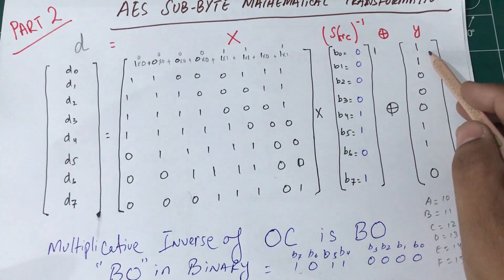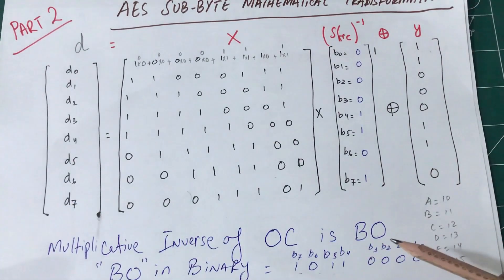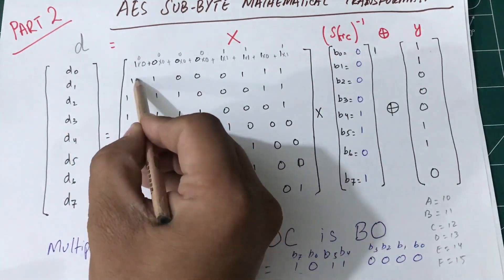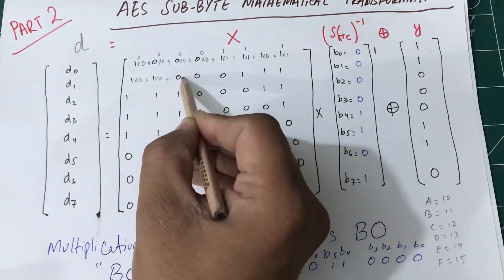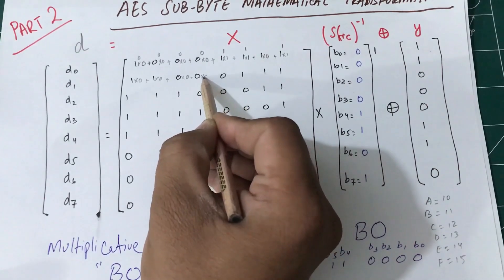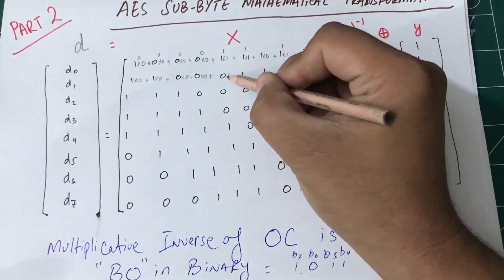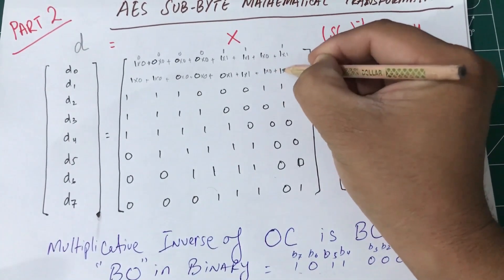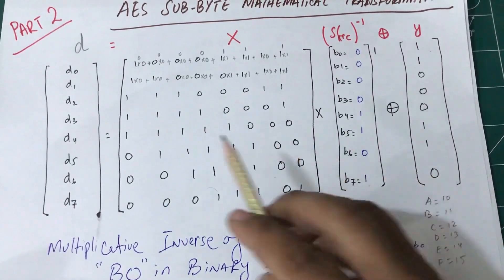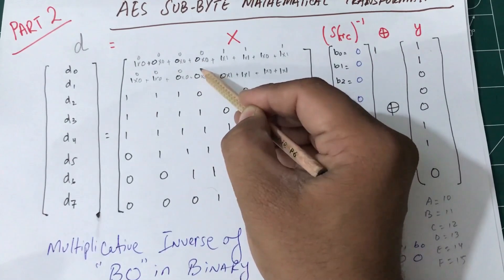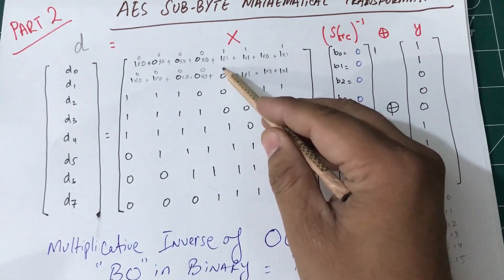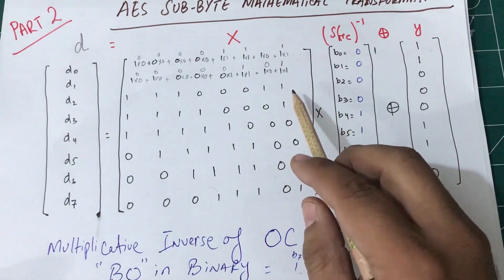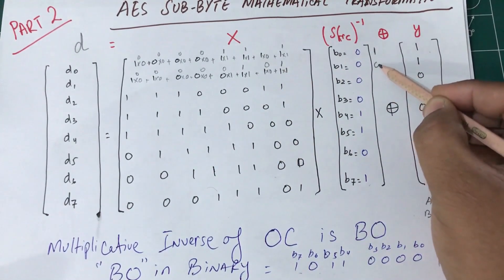Once I get all these row results, I'll XOR them with the value of Y to get D0. For the second row: four zeros multiplied by 0, then 0 multiplied by 1 is 0, 1 multiplied by 1 is 1, 1 multiplied by 0 is 0, and 1 multiplied by 1 is 1. That gives 1 plus 1 equals 2, and 2 mod 2 is 0. So this row result is 0.